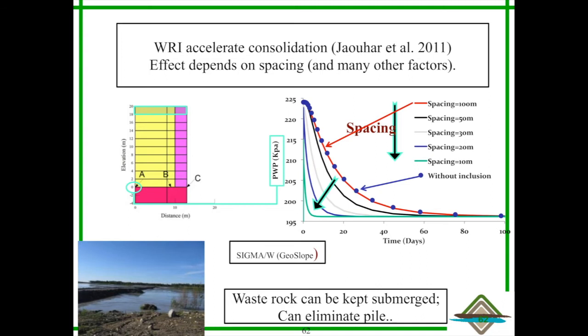If you don't have inclusions, it takes, in this case, about 60 days to dissipate your excess pore water pressure. It can be much longer if your hydraulic conductivity is lower, for instance. But if you're closer, it takes much less time. So when you're close to the inclusions, you do have a strength gain. You dissipate your excess pore water pressure, you have more stability.